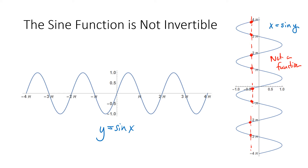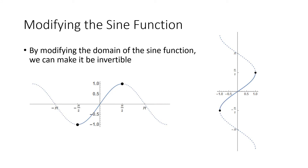At this point we might say we tried x equals sine of y, it's not a function, so we give up. But it turns out we can find a way forward: we modify the sine function. Instead of letting x run from negative infinity to positive infinity, we restrict the sine function.